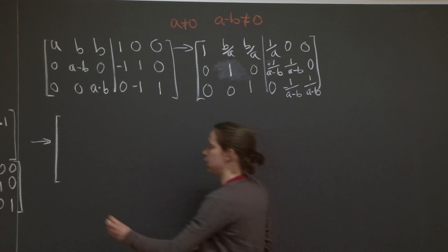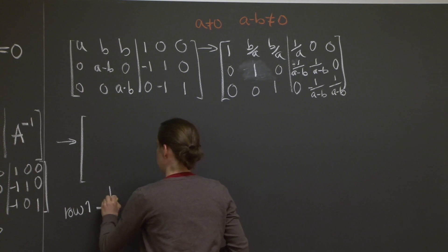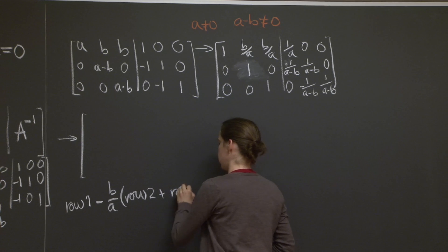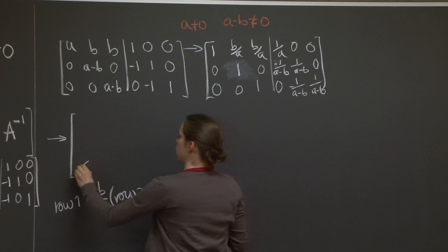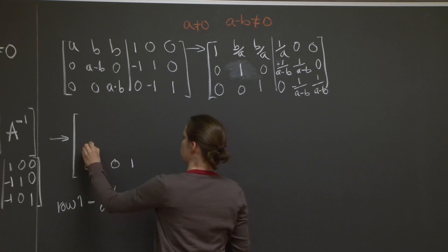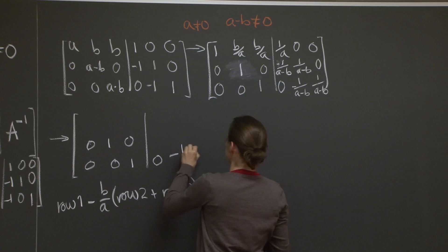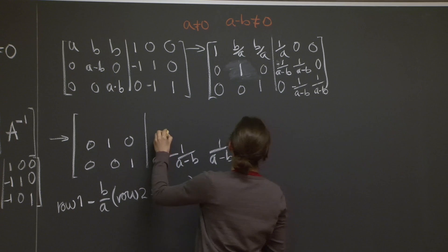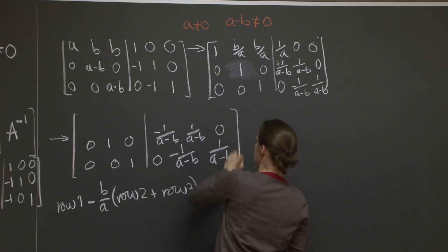Row 1 minus b over a times row 2 plus row 3. You want that to go into your row 1. These stay the same. Minus 1 over a minus b, 1 over a minus b, 1 over a minus b. All right.